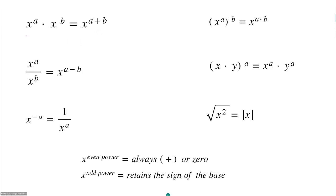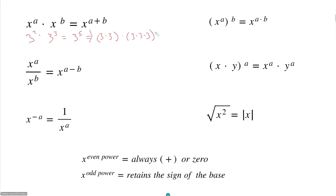For example, 3 squared times 3 cubed should be equal to 3 to the 5th. This should make logical sense because 3 squared is just 3 times 3, and 3 cubed is just 3 times 3 times 3. If we multiply these two things together, we're just left with five 3s.